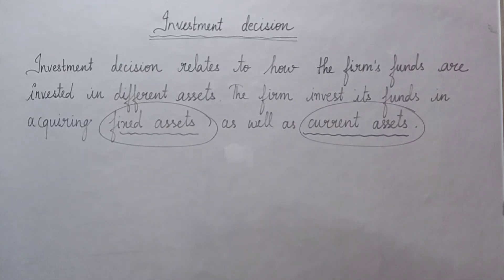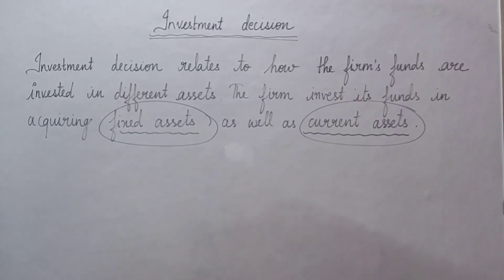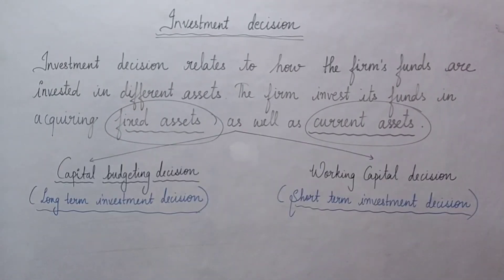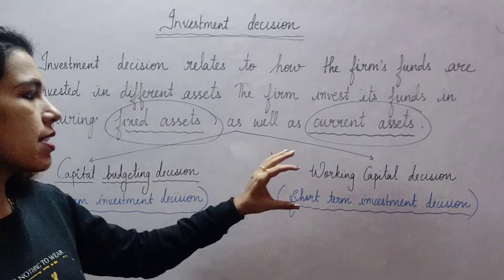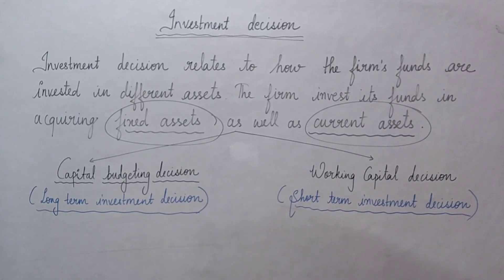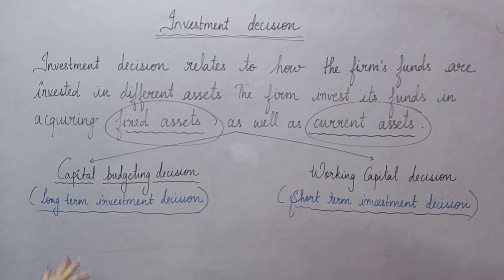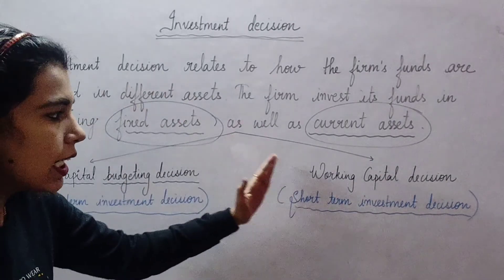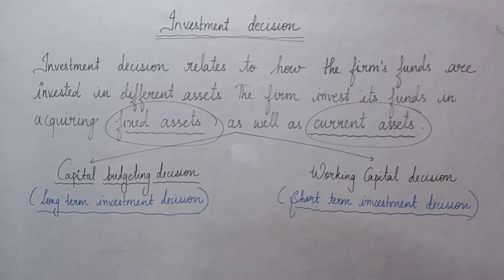Investment decision can be categorized into two types: capital budgeting decision and working capital decision. Capital budgeting decision is also called long-term investment decision — when we invest money to purchase fixed assets. Working capital decision means when we invest funds to purchase current assets.